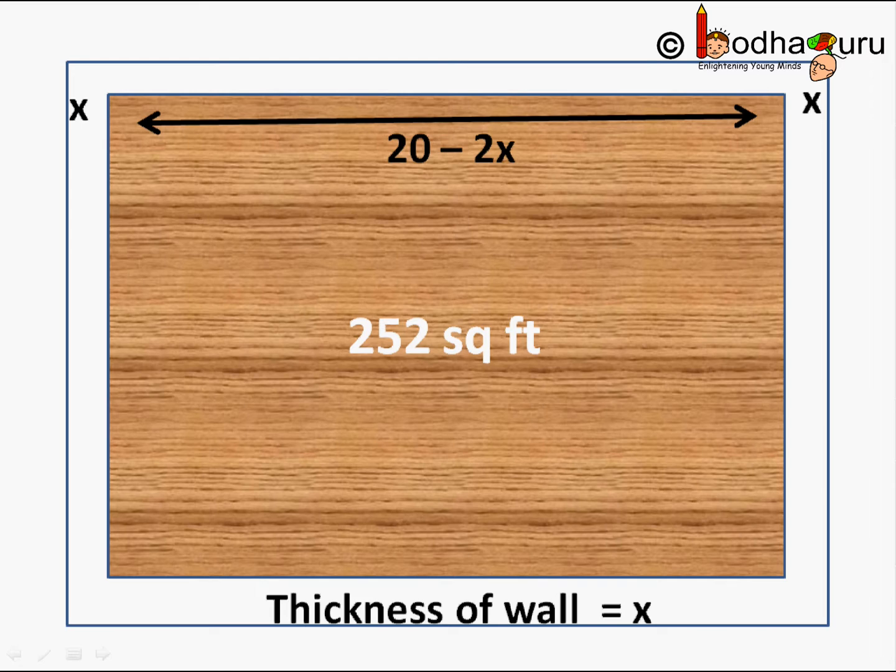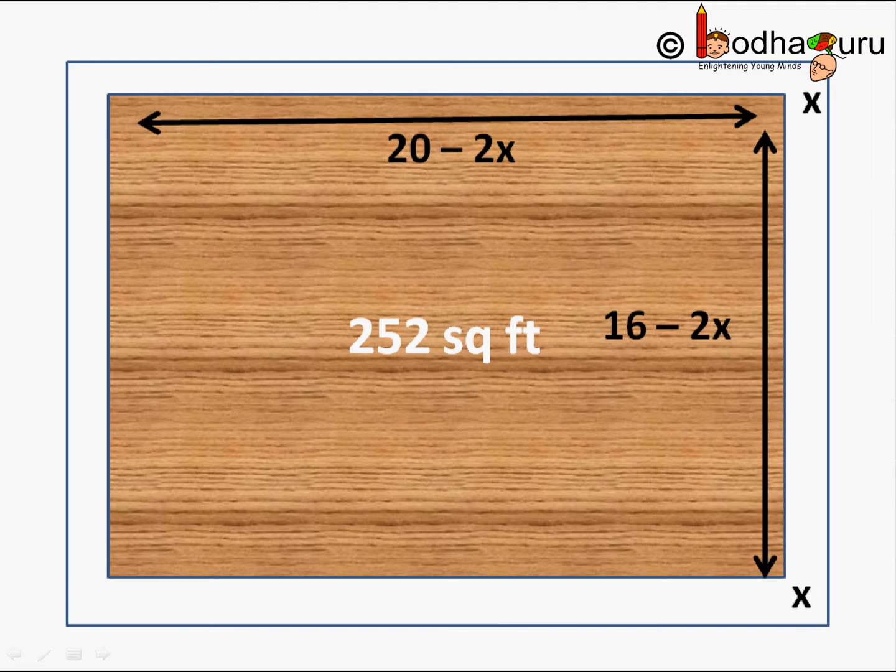Say the thickness of the wall is x. So now the new length will be 20-2x as x feet has been reduced from either side for the thick border wall. New width is 16-2x as x feet is reduced from either side because of the wall.